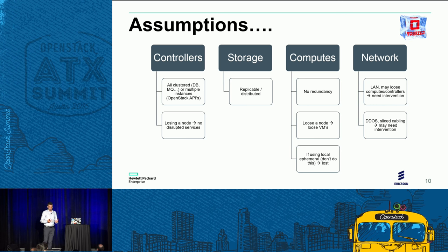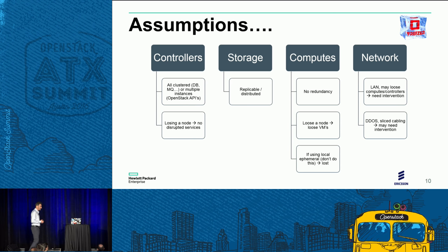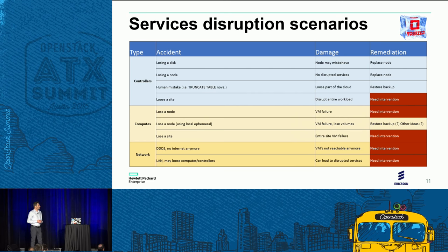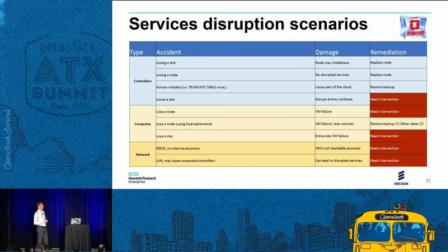Internet connection could be another cause of problems — a disrupted service from the internet provider, or even a DoS attack that excludes the service from the internet. These are things we can try to address. We tried to map the causes, the damage, and the possible remediation to address these failures.